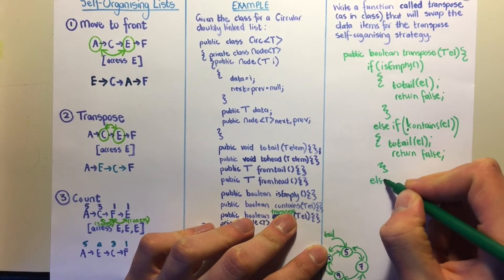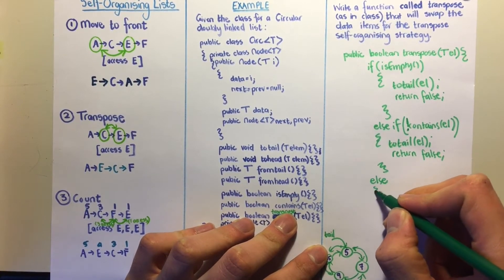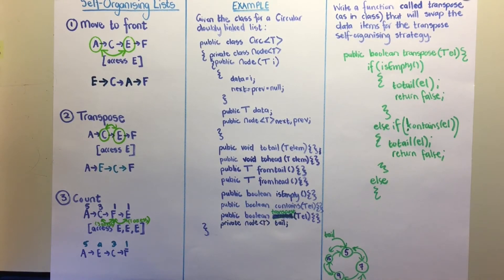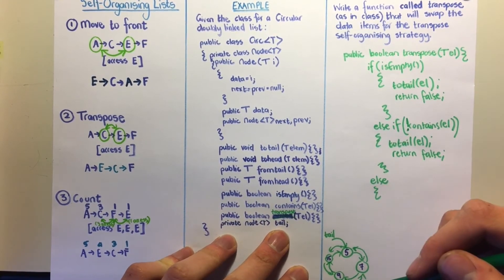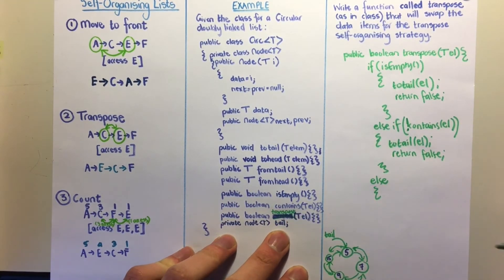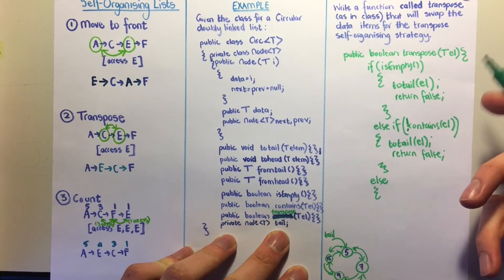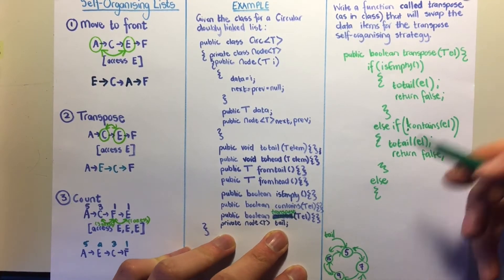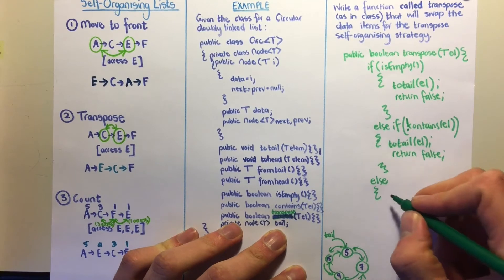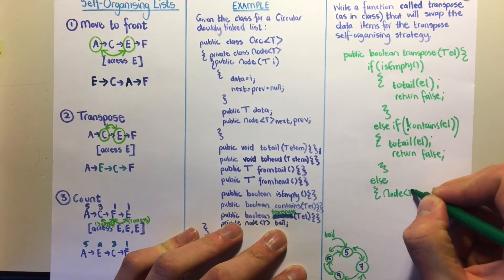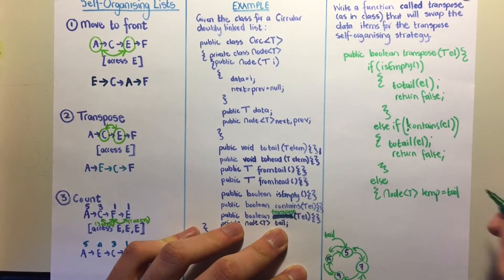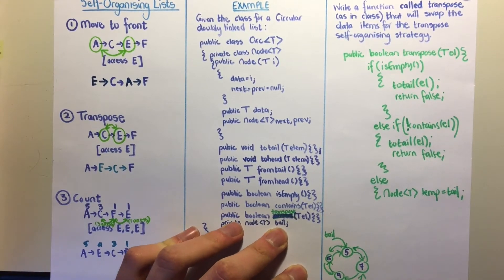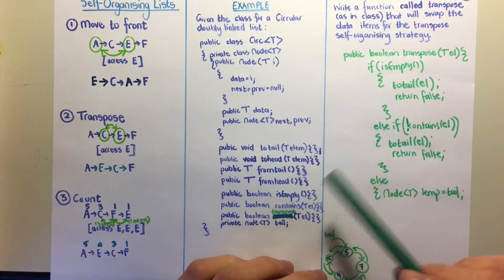Now we reach the case where we know the list is not empty and the element is in the list. We create a traversal variable — a node called temp assigned to tail — so we don't lose our tail pointer by moving it directly.